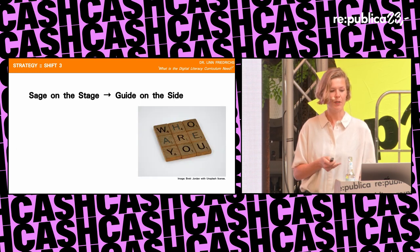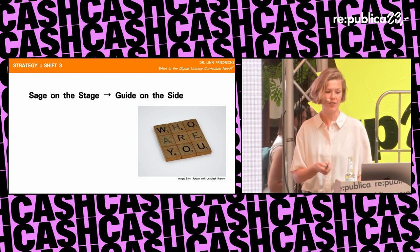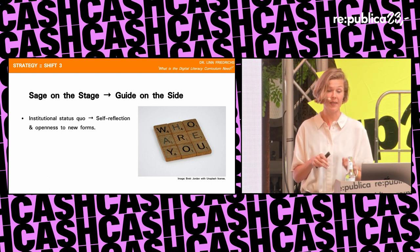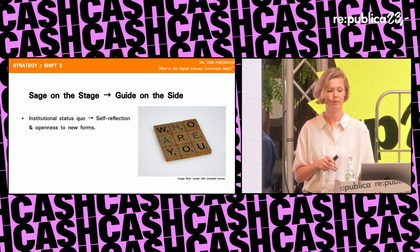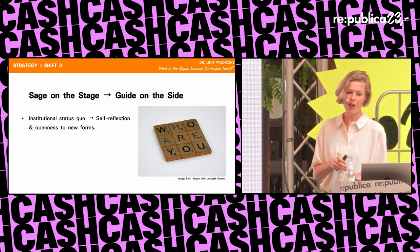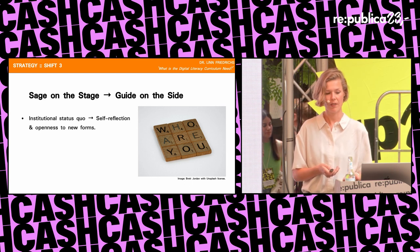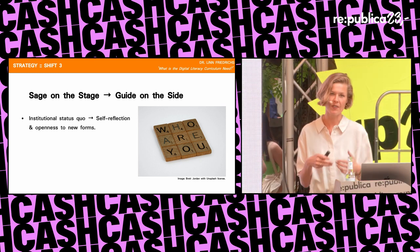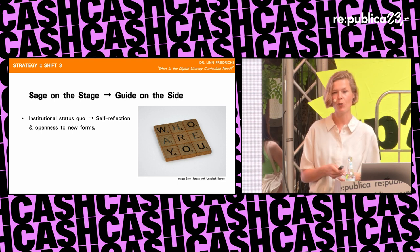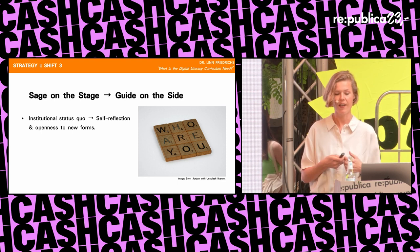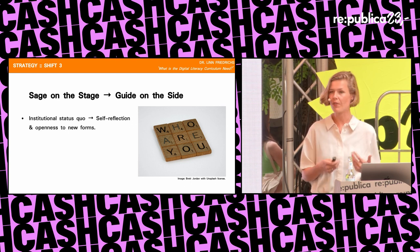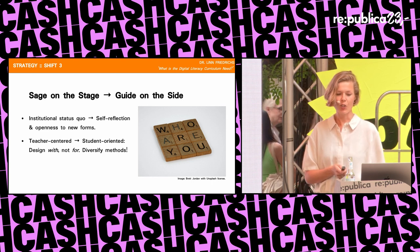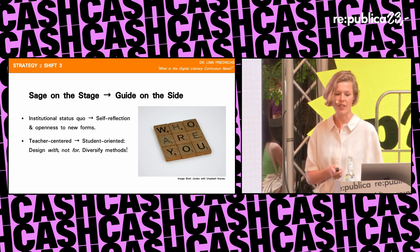Finally, shift three: from sage on the stage to guide on the side. On a foundational level, educational institutions must accept that they don't have all the answers and critically reflect on their own role and responsibilities in a system of power and privilege as it exists now. Only if we do this — and I say 'we' because I'm part of the system — can we support truly new ways of learning, being, and acting that may challenge our own norms and traditional practices. On a teaching level, education must shift from a teacher-centered approach to a more student-oriented approach.